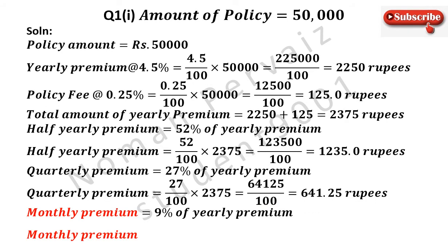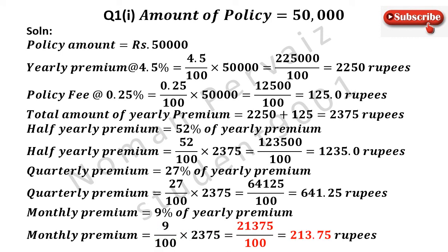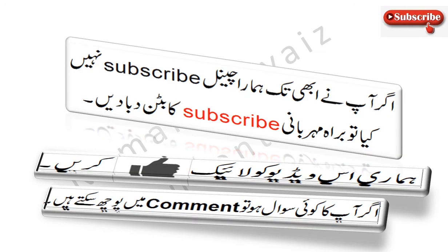Here we need to calculate monthly premium, which is equal to 9%, percentage sign is removed by dividing the whole term with 100, multiplied with total amount of yearly premium which is 2375. 9 multiplied with 2375 becomes 21375, divided by 100 comes as it is. Now if we divide 21375 by 100, then it becomes 213.75 rupees. Hence this is our answer. Please like this video and subscribe our channel.